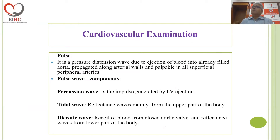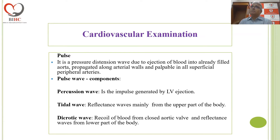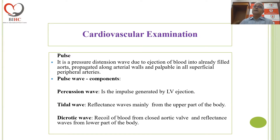Once you have reached the cardiovascular examination stage from the general examination, you start the exam in the sequence of pulse, blood pressure, JVP, and then the chest wall. The pulse is a pressure distension wave due to ejection of blood into an already filled aorta, propagated along the arterial walls and palpable in all superficial peripheral arteries.